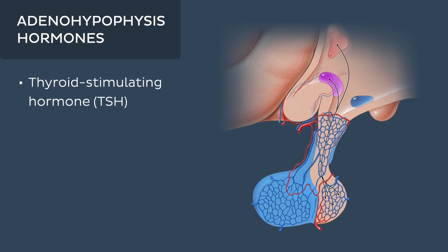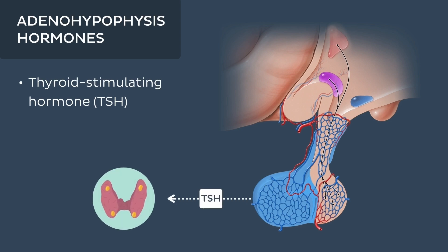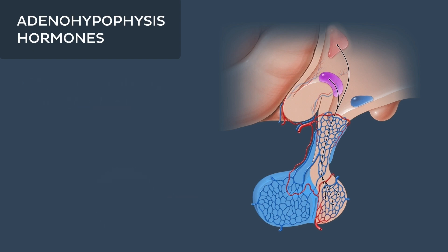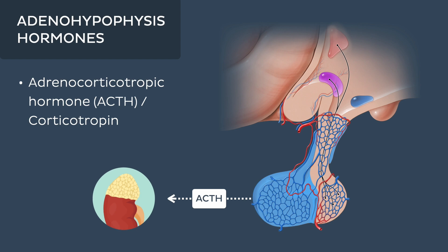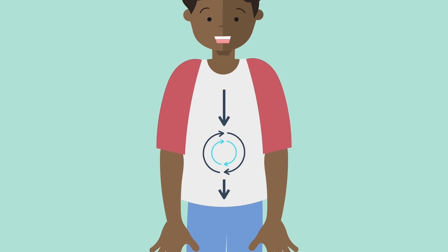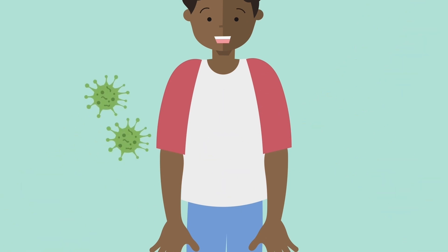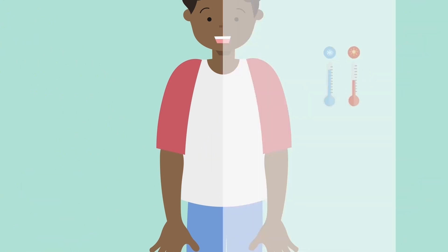Thyroid stimulating hormone targets the thyroid gland and leads to the release of thyroid hormone. Adrenocorticotropic hormone, also known as corticotropin, targets the suprarenal glands and leads to the production of glucocorticoids, which regulate various metabolic, immunologic, and homeostatic processes.